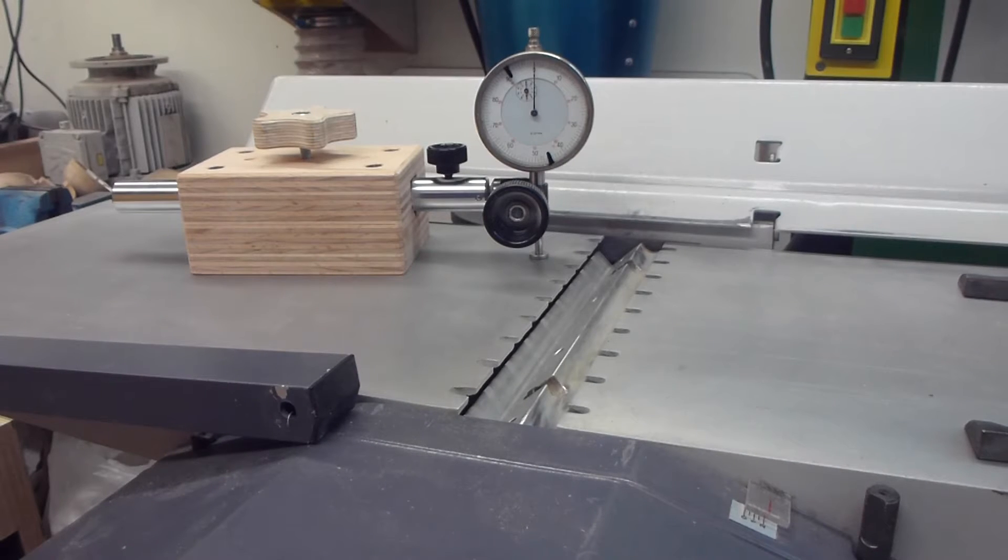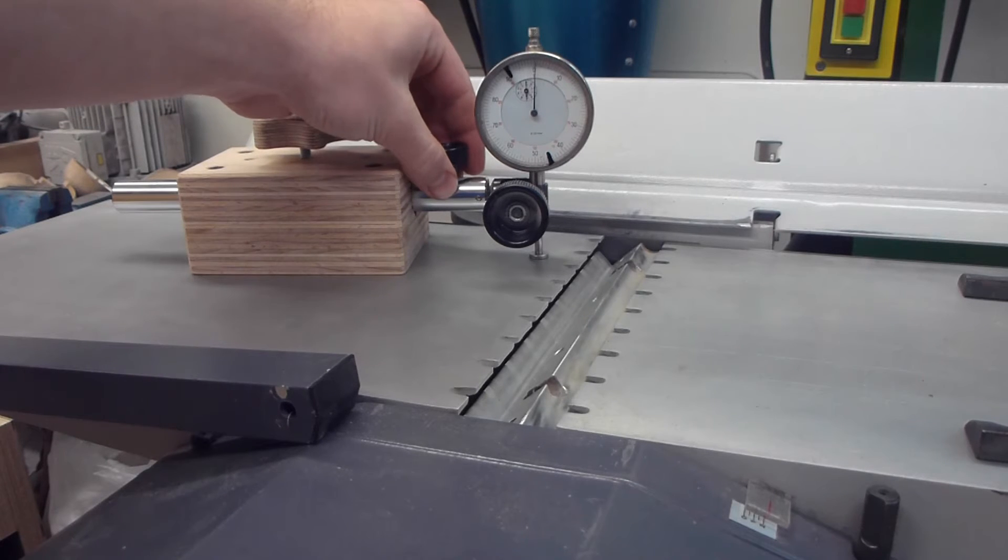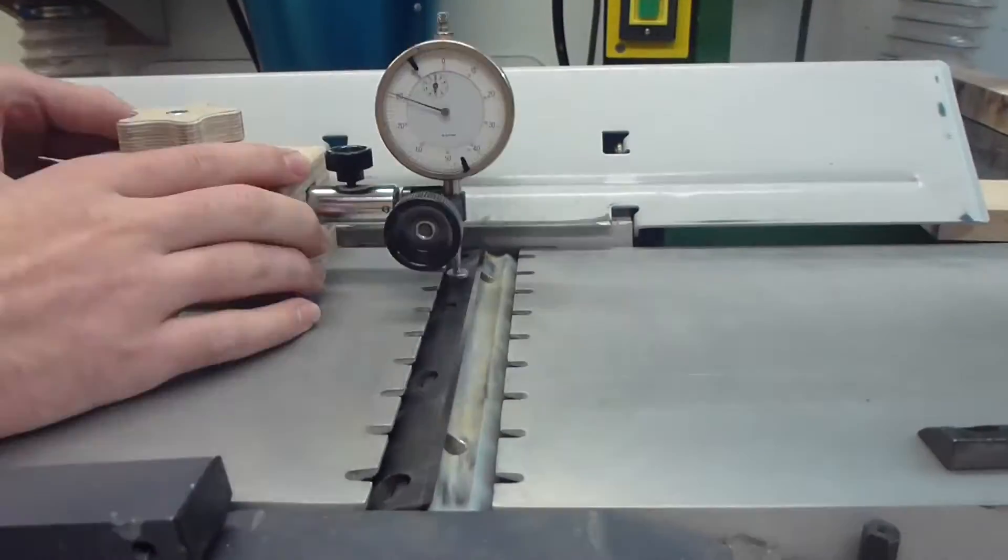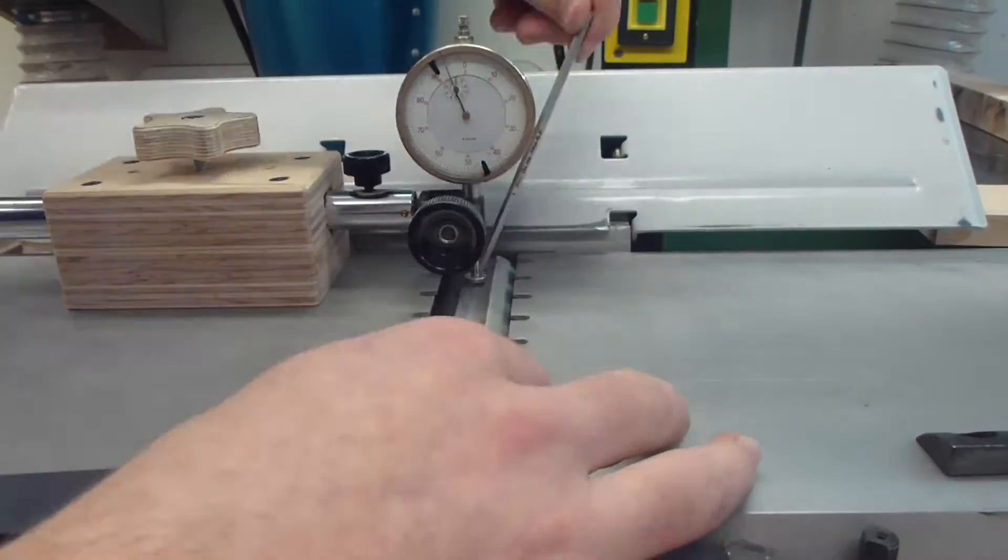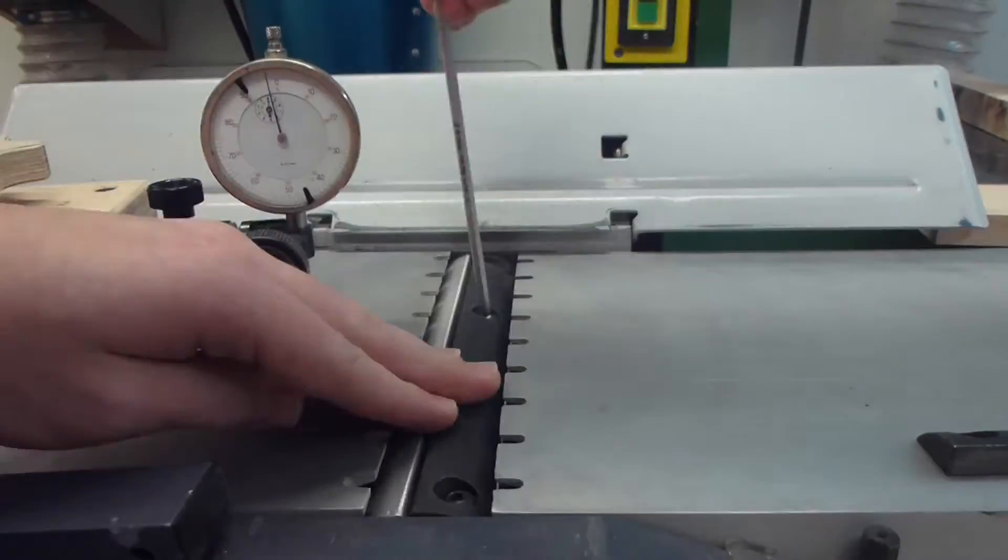To set up the knives I have this homemade jig which is basically a dial indicator that I set to zero and it helps me set the knives at the right height. And this is just a quick time lapse of the whole process. I watched several tutorials on how to set up jointer knives and that made it a whole lot easier.